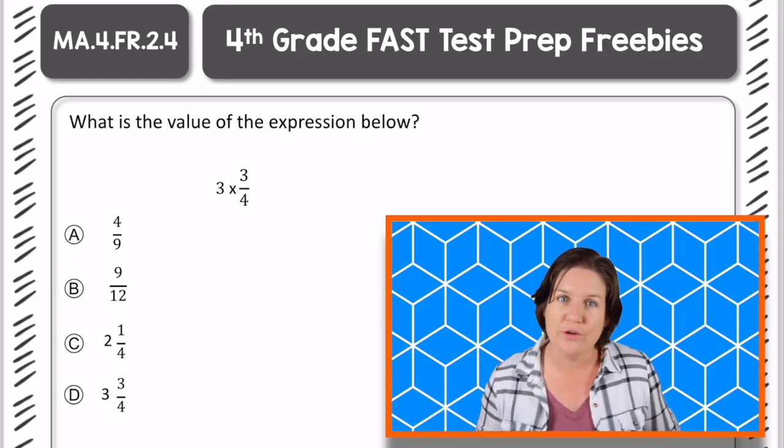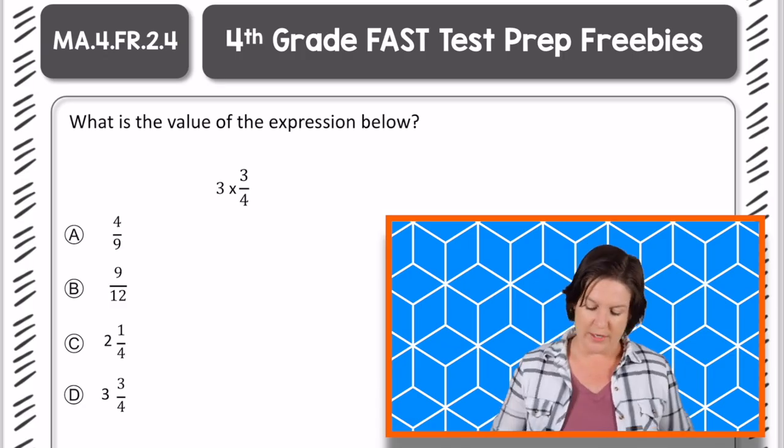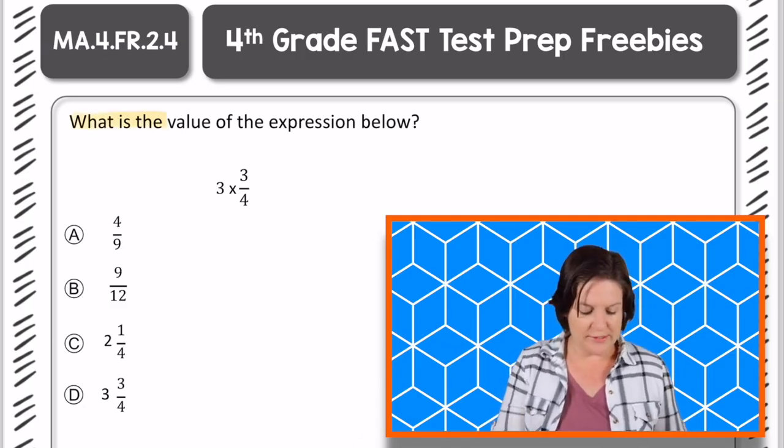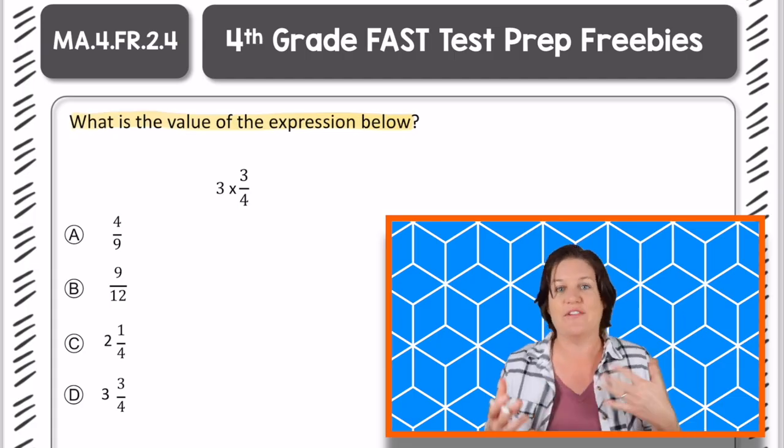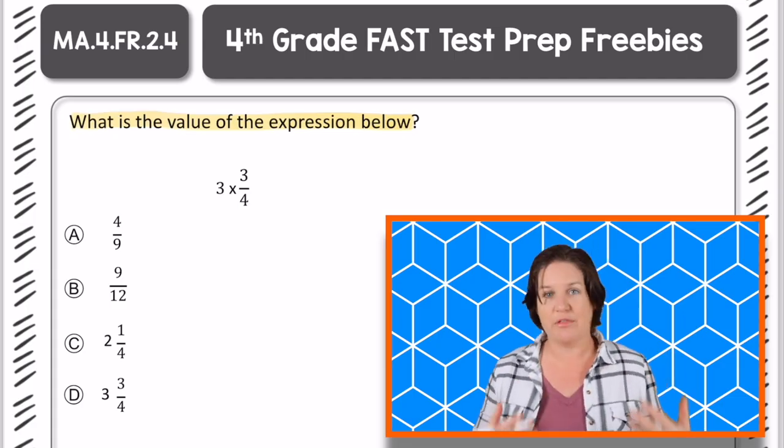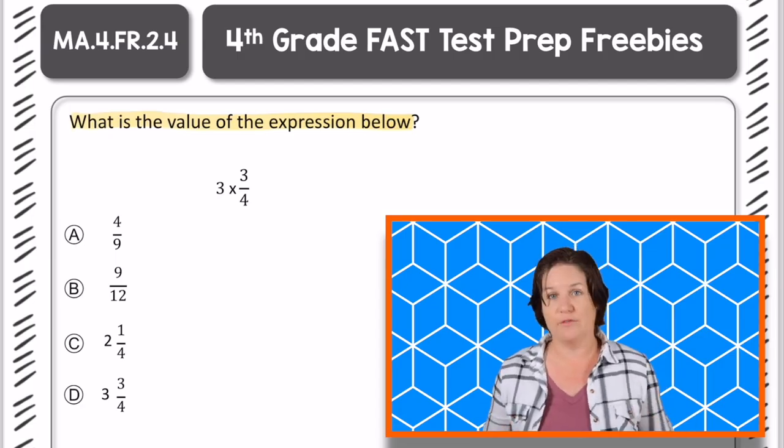Welcome back, 4th grade. Let's go over this one. All right, this one says, what is the value of the expression below? An expression means that we're considering the part that doesn't have an equal sign. So down there we have 3 times 3/4.